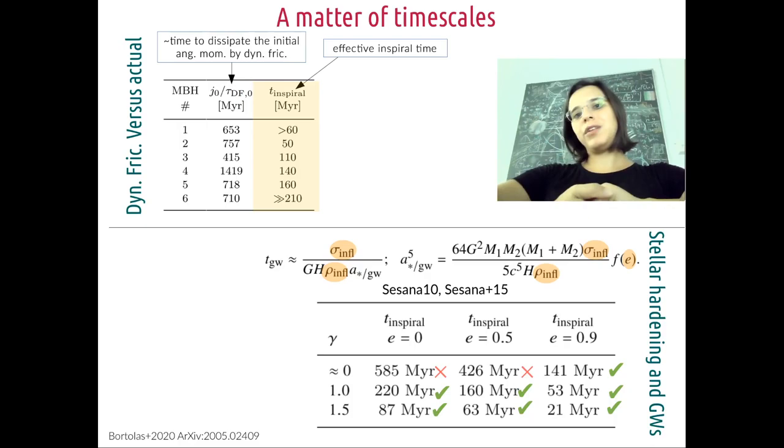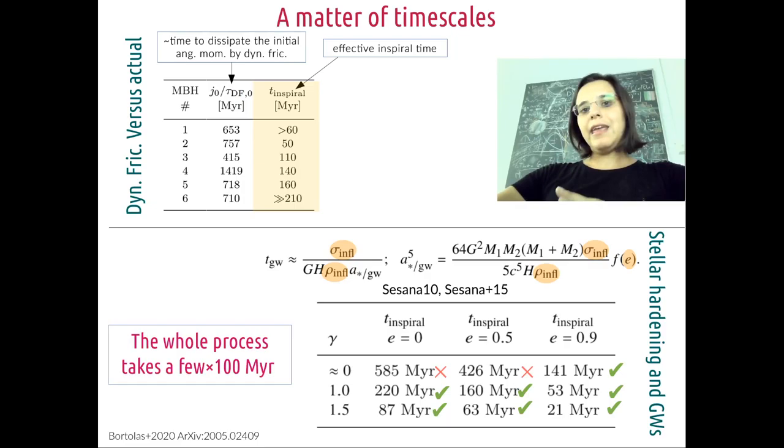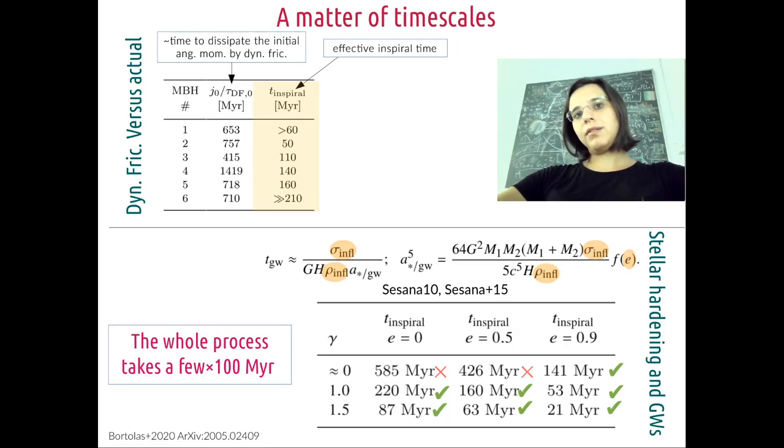And another time scale we wanted to figure out is the time those black holes would take to undergo the subsequent phases, like the stellar hardening phase and also the final coalescence. And we worked those time scales out for different assumptions for the eccentricity and also for the density profile. And basically, if we neglected the most pessimistic assumption we made, the whole process can be thought as taking only a few hundred million years.